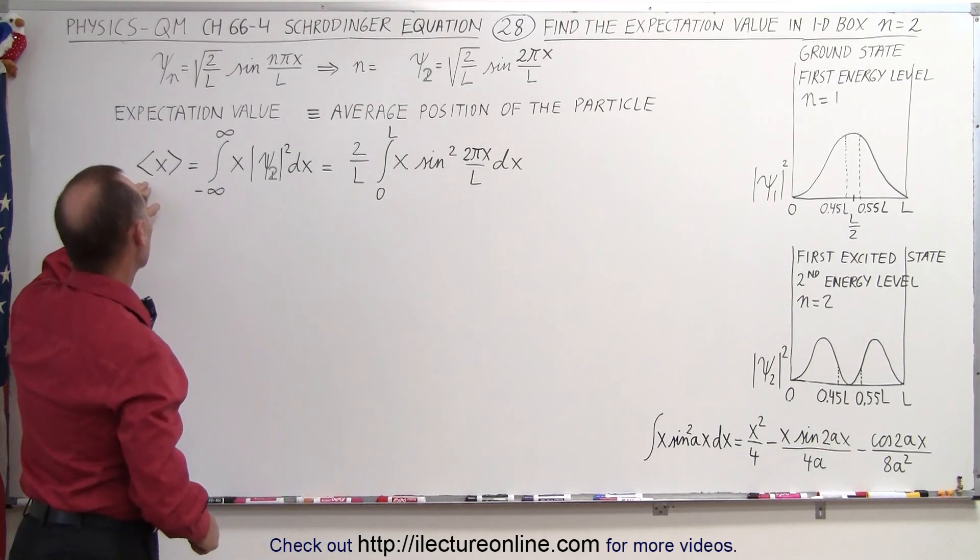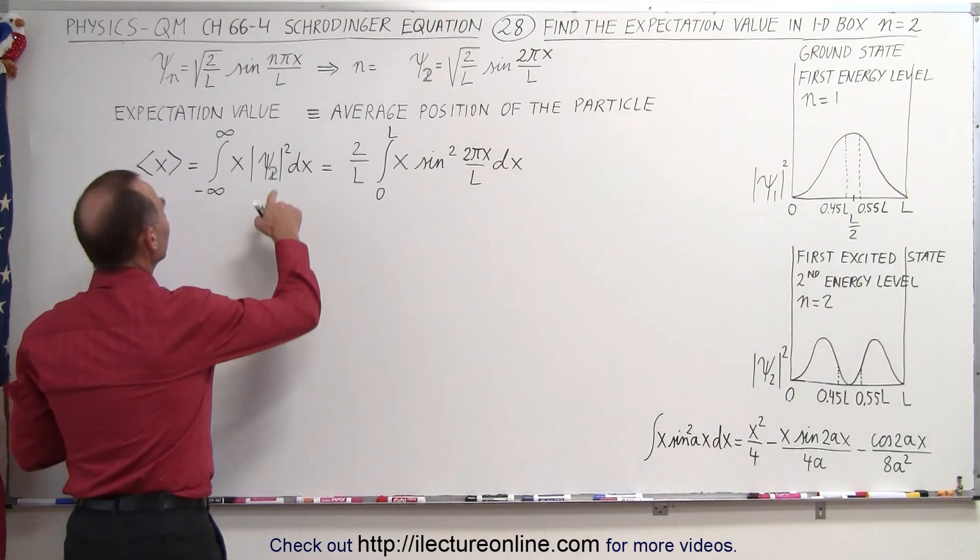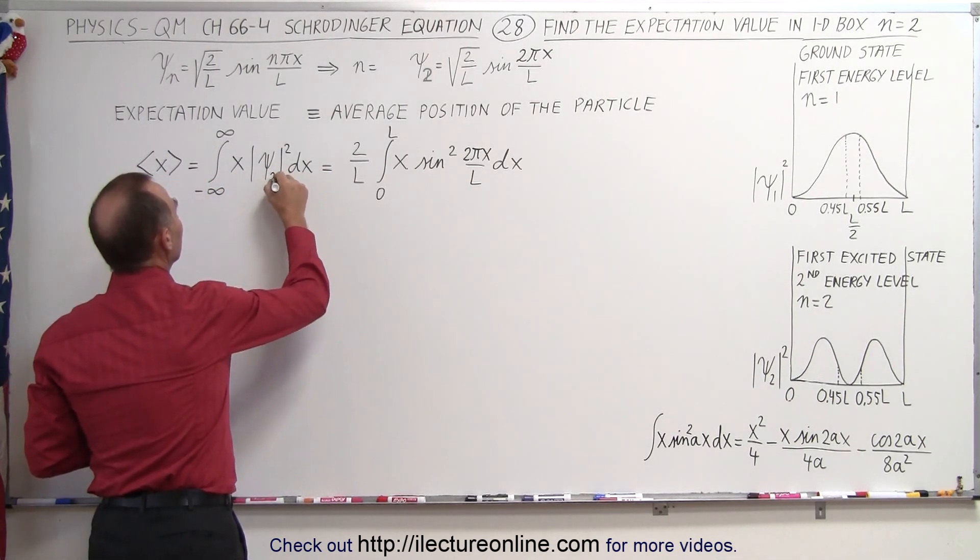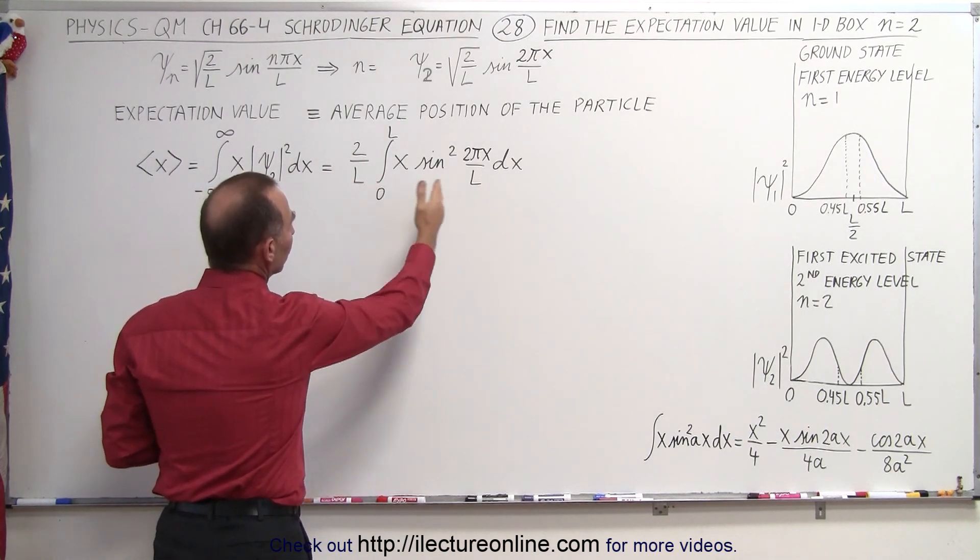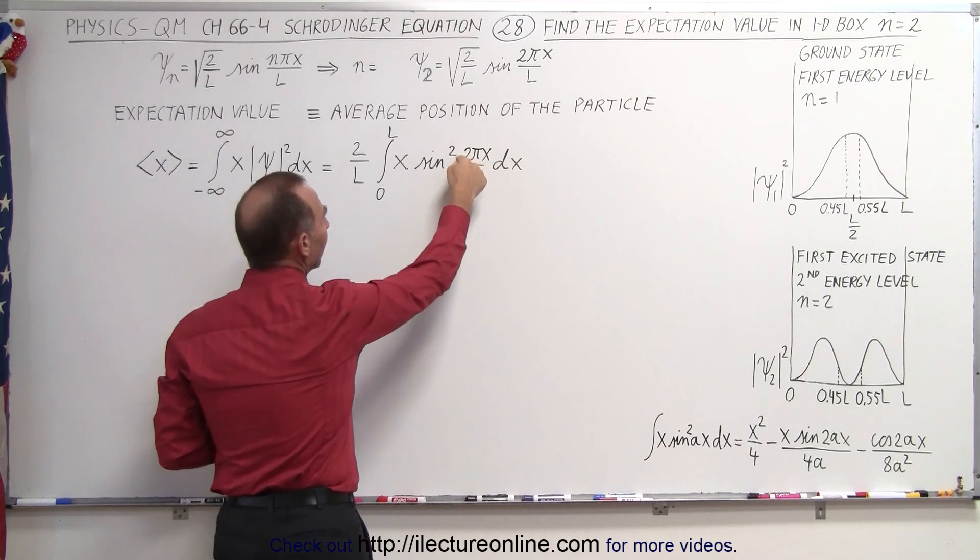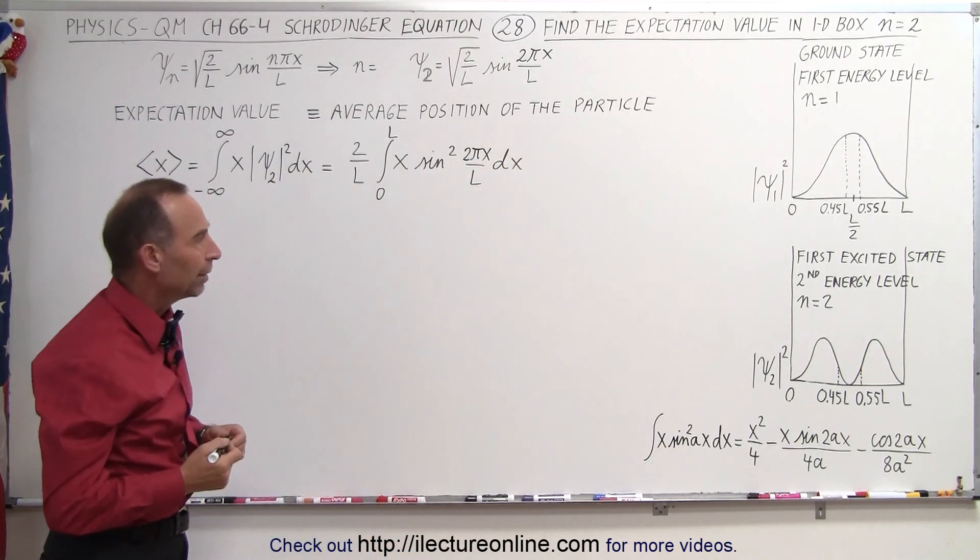So again, to find the expectation value, we multiply x times the probability density function. But in this case, we're going to take it for n equals 2, and so the integral looks virtually the same, except the angle now is 2 pi x instead of 1 pi x over l. Again, this is kind of a difficult integral, so we have explained how to find that integration right here.